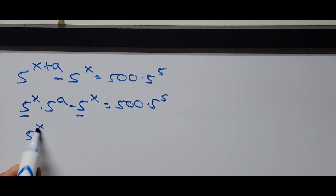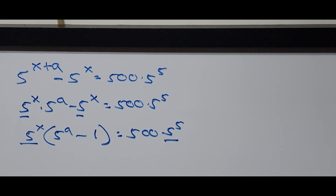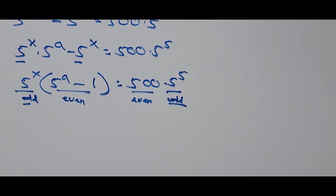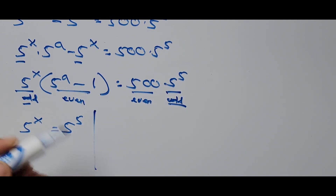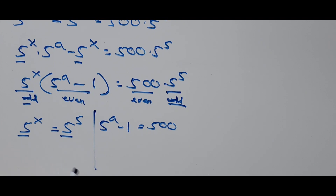From here, 5^x equals 500 times 5^5. We equate 5^x to 5^5, reasoning that the odd components match on both sides. So the equation becomes 5^x equals 5^5. Since they have the same base, therefore x equals 5. On the right side, the remaining equation gives 5^a minus 1 equals 500, so 5^a equals 501.